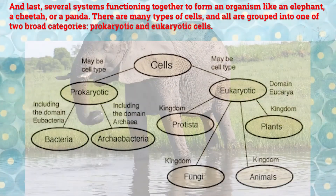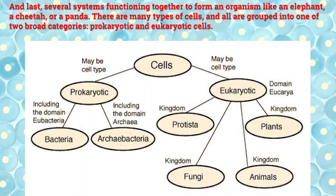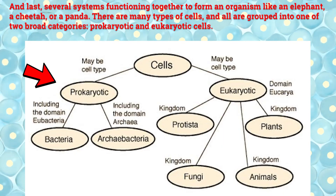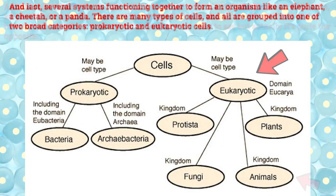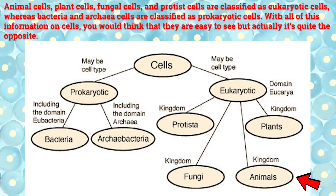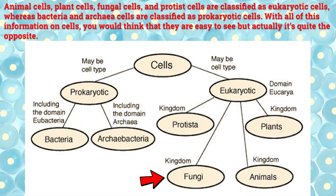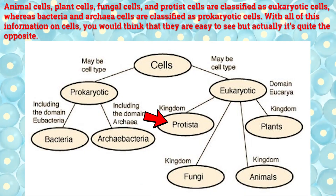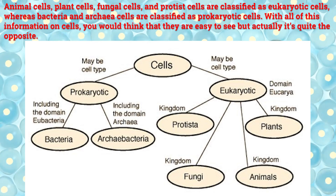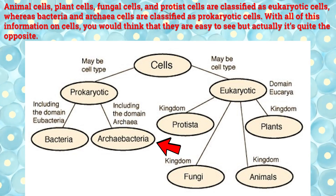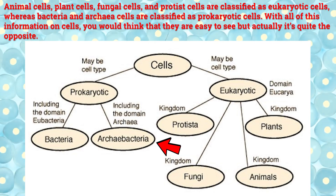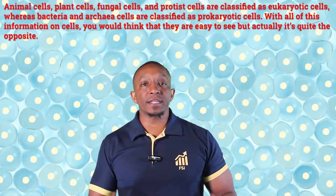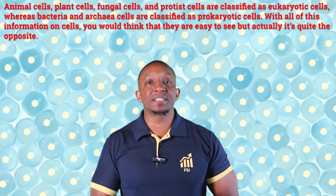There are many types of cells and all are grouped into one of two broad categories: prokaryotic and eukaryotic cells. Animal cells, plant cells, fungal cells, and protist cells are classified as eukaryotic cells, whereas bacteria and archaea cells are classified as prokaryotic cells. With all of this information on cells, you would think that they are easy to see, but actually it's quite the opposite.